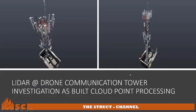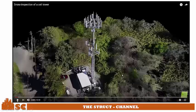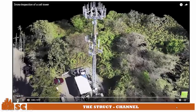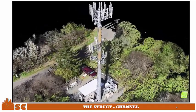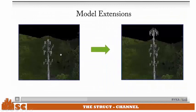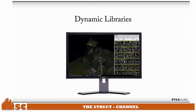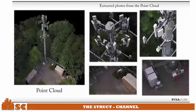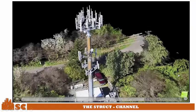LiDAR drone can be used for communication tower investigation for as-built cloud point processing. You can check the tower height and the appurtenance and elements of the tower, and with this point cloud you can do AutoCAD and create 2D or 3D models. Applying drone for a tower, with 360-degree rotation, you can also measure the height and perimeter of the tower accurately. From the model, you can add appurtenance if you want to revise the design, and collect library pictures. Flying the drone, you can check the elements of the appurtenance.